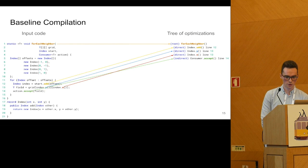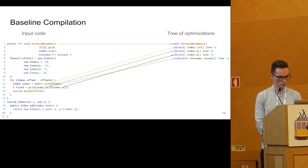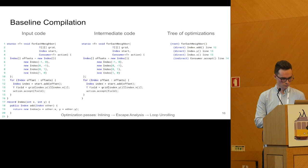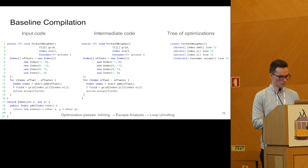We have a root, which is the root of the compilation unit, and we have calls to methods at X and Y — it says 'direct' in front of them because these are simple direct invocations — and we have a call to method X step, which says 'indirect' because there's dynamic dispatch. I'll show three optimization passes: inlining, escape analysis, and loop unrolling, and I'll show how we record all these optimizations.